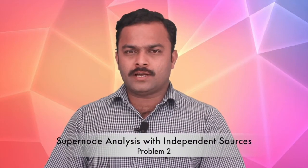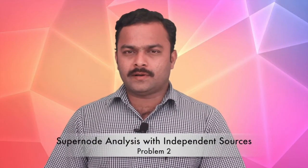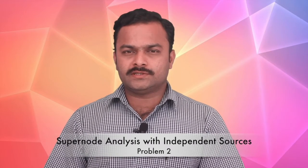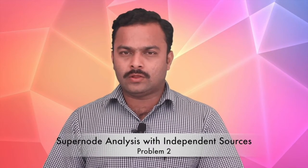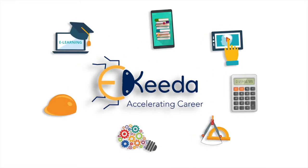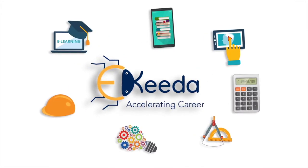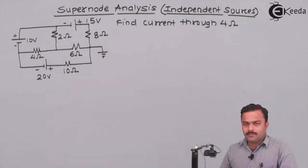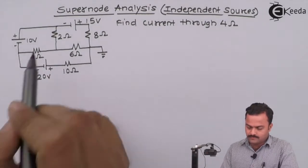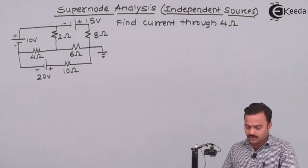In this video, we are going to see how to apply KCL in a circuit where only a voltage source is present between two non-reference nodes. Here is the problem: we're supposed to get the current flowing through a 4-ohm resistor using nodal analysis.